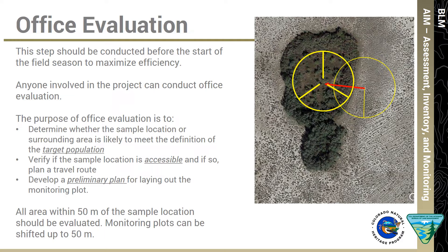Site evaluation is a two-step process. The first step takes place in the office and should be conducted before the start of the field season to maximize efficiency. Anyone involved in the project can conduct office evaluation, including BLM resource specialists, contracted crew managers, or crew leads. The purpose of office evaluation is to determine whether the sample location or surrounding area is likely to meet the definition of the target population, to verify if the sample location is accessible, and if so, to plan a travel route, and to develop a preliminary plan for laying out the monitoring plots. When conducting office evaluations, all area within 50 meters of the sample location should be evaluated because monitoring plots can be shifted up to 50 meters away from the sample location to be fully within riparian and wetland habitat.